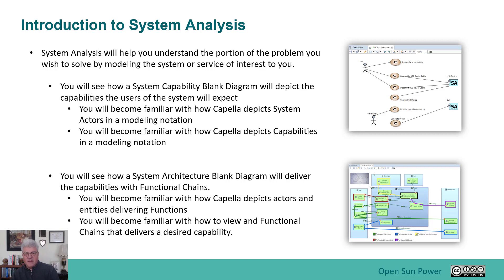Next we're going to talk about the system architecture blank diagram, which shows how the capabilities described in the previous section are delivered — by having functions that deliver the capabilities through the entities to the charger and to the actual phone. You'll also become familiar with how to view the functional chains that are in that diagram.